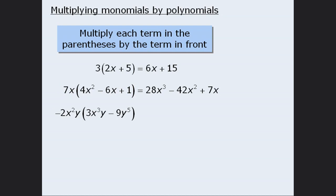One last example. First, we'll multiply negative 2x squared y by 3x cubed y to get negative 6x to the power of 5 y squared. And then we'll multiply negative 2x squared y by negative 9y to the power of 5 to get plus 18x squared y to the power of 6.